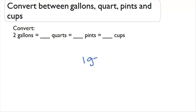One gallon is equal to four quarts. One gallon is also equal to eight pints, since there are two pints in each quart. One gallon is also equal to 16 cups, since there are two cups in each pint.